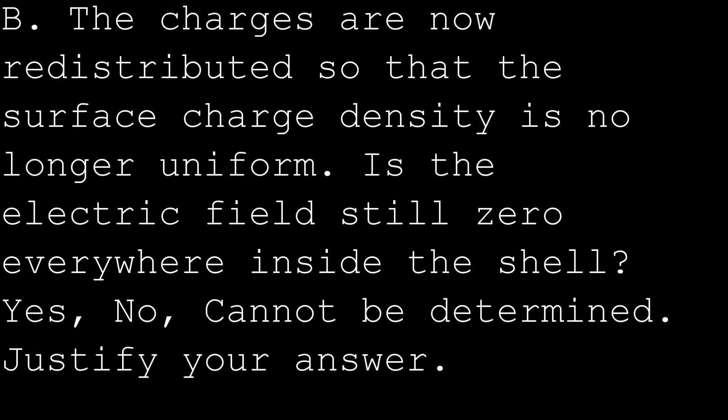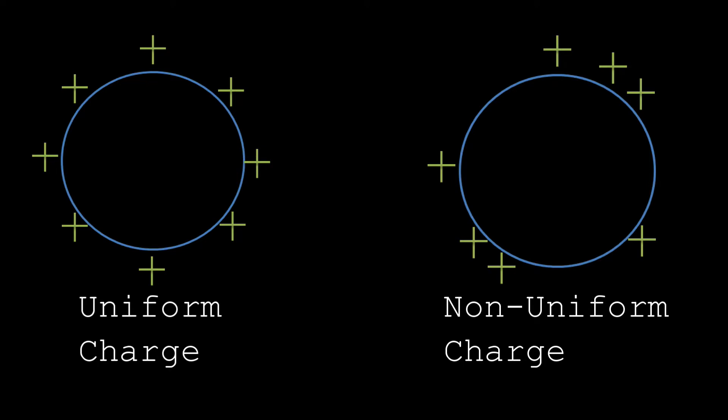Part B asks: the charges are now redistributed so that the surface charge density is no longer uniform. Is the electric field still zero everywhere inside the shell? In the uniform case, charge is equally distributed around the sphere and cancels out inside. But with a non-uniform distribution, the charge is clustered in certain areas and not others, which does not allow the charges to cancel out. This polarizes the sphere, creating a net charge effect inside. Therefore, the answer is no — the electric field is not zero everywhere inside.